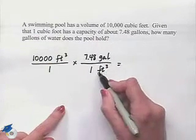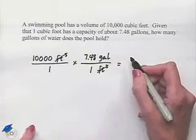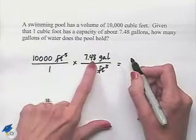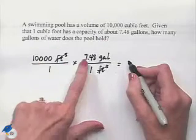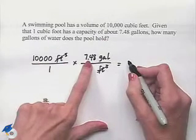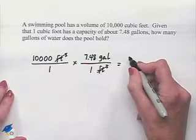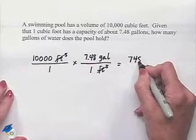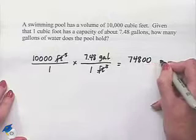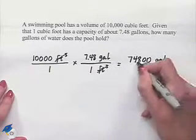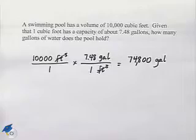Now we'll notice that our unit for cubic feet will divide out. We're going to multiply 7.48 times 10,000, which requires us to move our decimal point four places, so we're going to have 7, 4, 8, 0, 0, and the unit that's left would be gallons. So we're going to have 74,800 gallons.